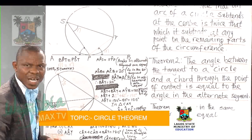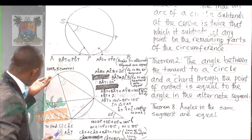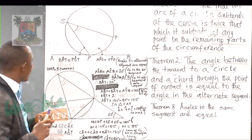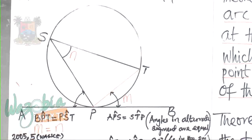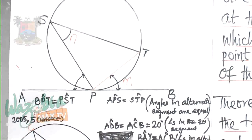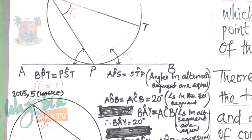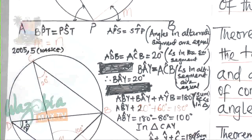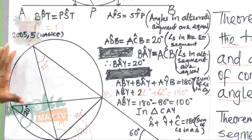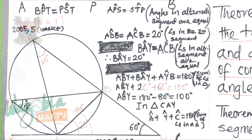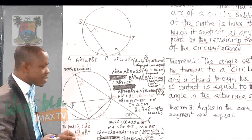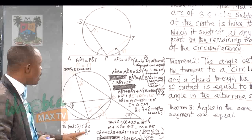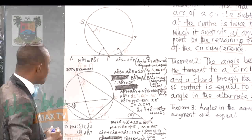Let's take a quick look at a question. Go to WAEC 2005 question 5 in your booklet. You have the diagram given to you and you were asked to find angle CAX and angle ABY.